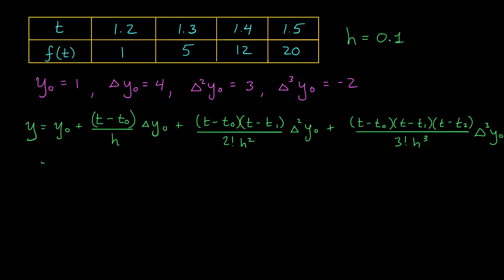My y-naught value is 1, my t-naught value is going to be 1.2, so I'm going to have a t minus 1.2 here. I'm going to divide by 0.1, that's my h, and I multiply by 4, the value of delta y-naught. Now I go to my next term. I have t minus t-naught, again 1.2, times t minus t1, that's 1.3.